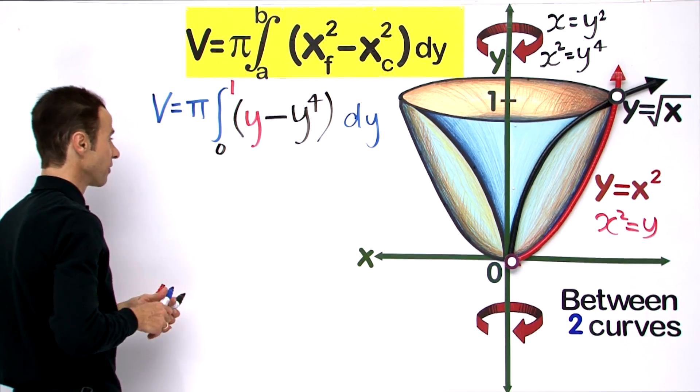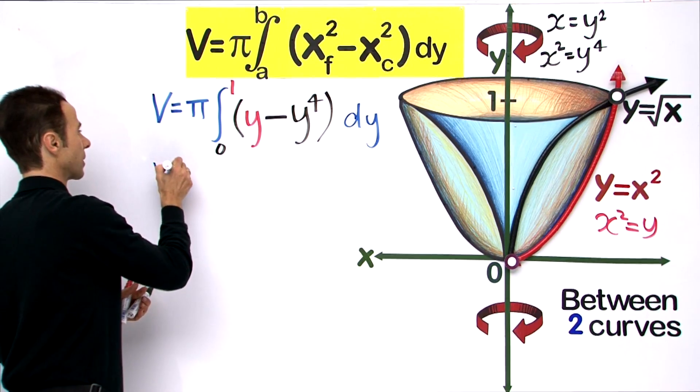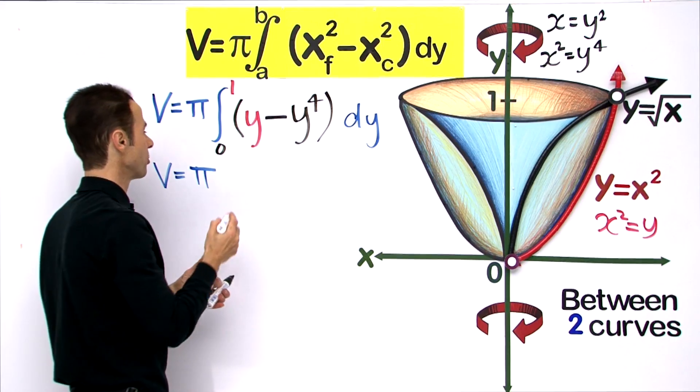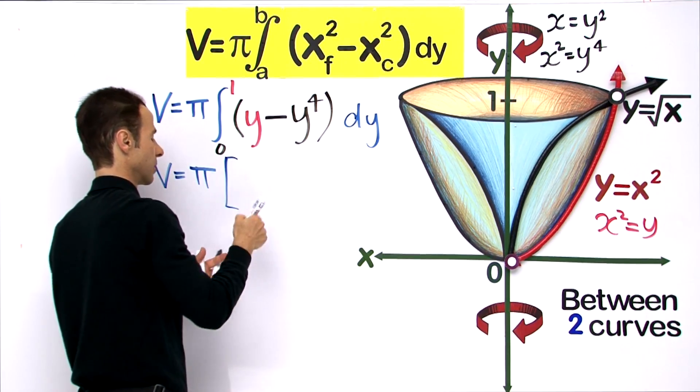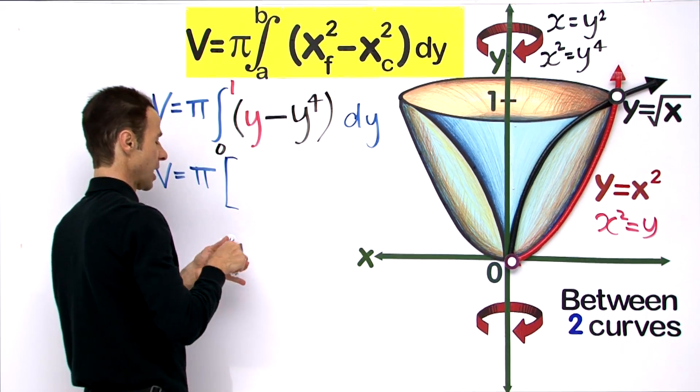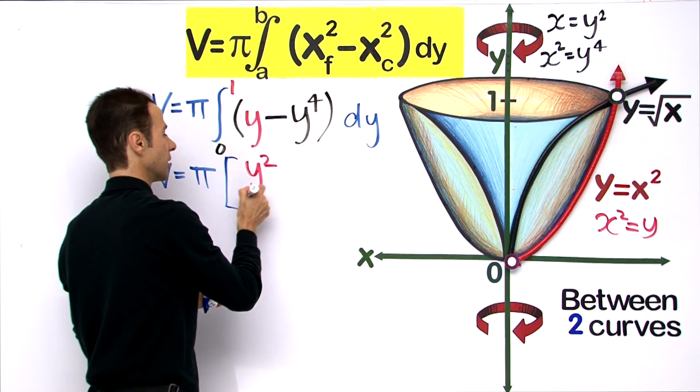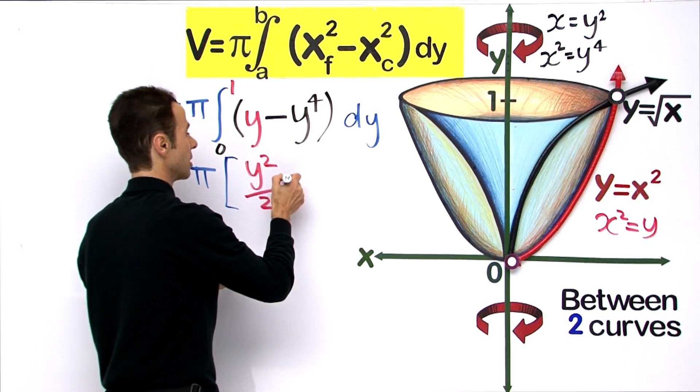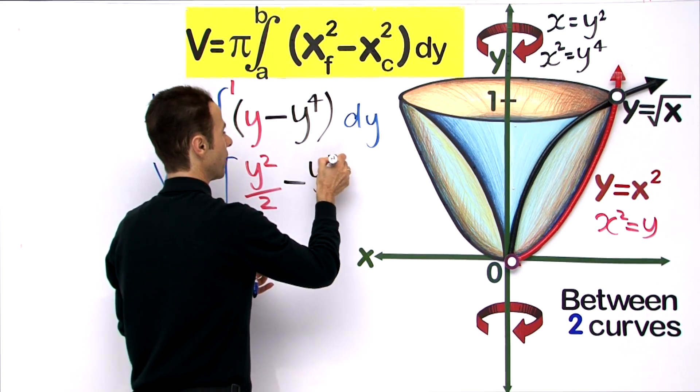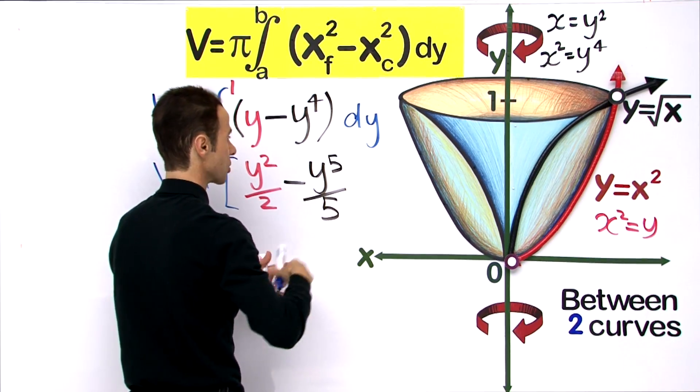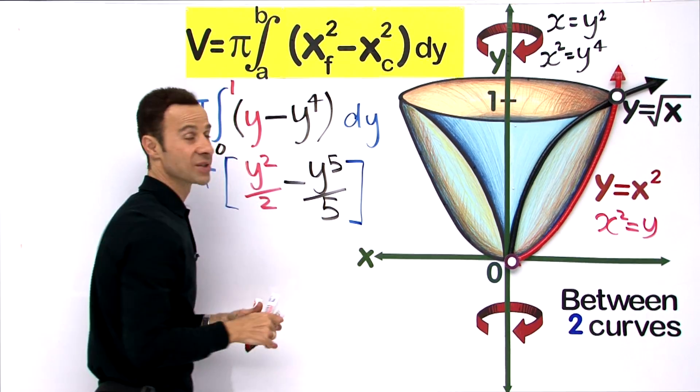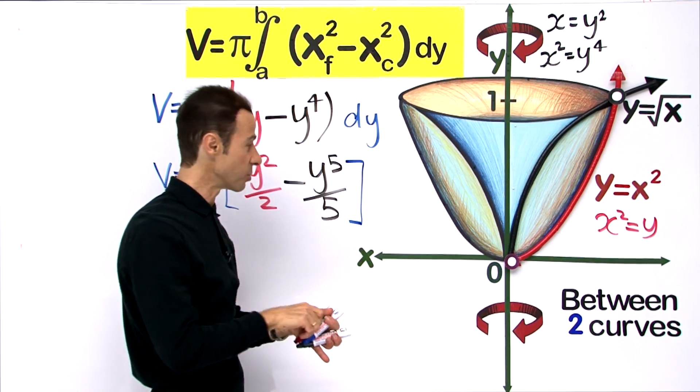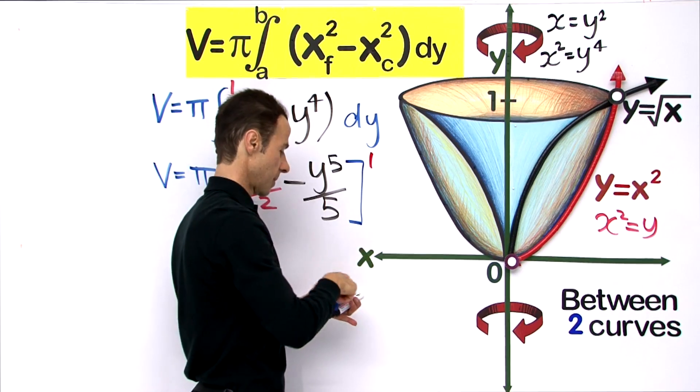Now we integrate this. So v equals pi - integrating y raises the power to y squared and we divide by 2, then subtract y to the power of 5 over 5. The limits are y equals 1 to y equals 0.